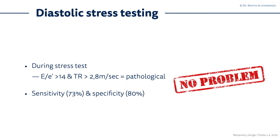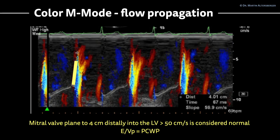If you combine both measurements — the E/E' and the TR velocity — the sensitivity and specificity are not that bad. If you have only one measurement possible, such as only the E/E', it's actually not that good. Keep diastolic stress testing in mind; if you cannot perform it, an invasive measurement would be more appropriate. Another measurement, which is rather difficult to do but important and usable in several formulas, is the color M-mode flow propagation velocity.